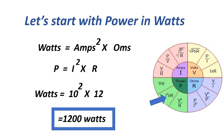The next power formula: watts equals amperes squared times ohms, or P equals I squared times R, equals 10 squared — or 100 — times 12. Our answer is 1,200 watts.